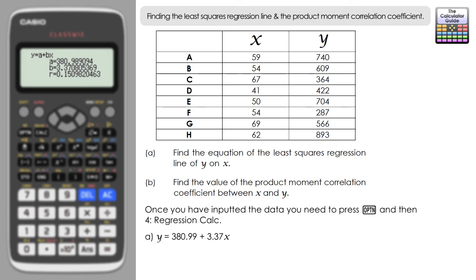And for part B, well, we've already found the value of the product moment correlation coefficient. It's this R value that we have at the bottom here: 0.151, let's say to three decimal places. That is the correlation coefficient that we need for part B. Now that should be a value between negative one and one, and we can see that our value is quite close to zero there, so that would suggest very little correlation between the two variables that we have there, X and Y.